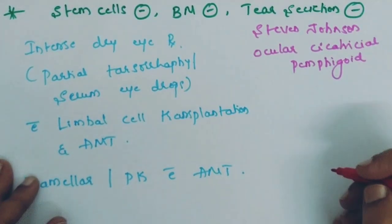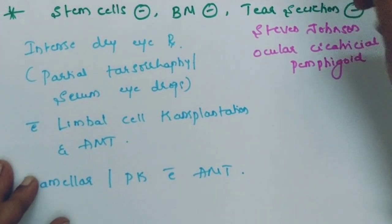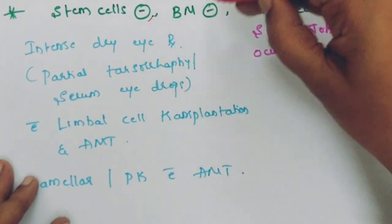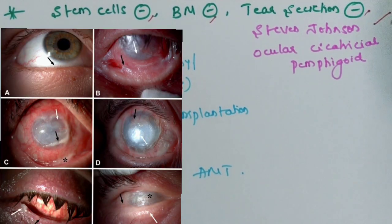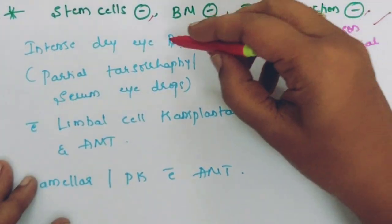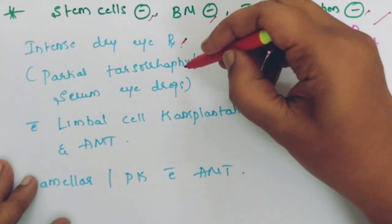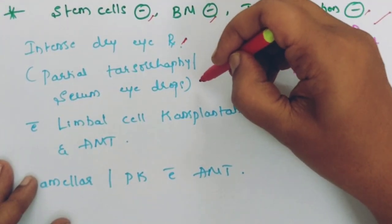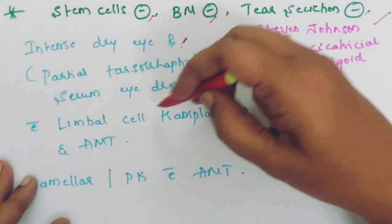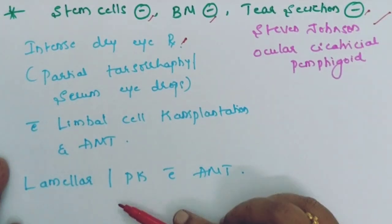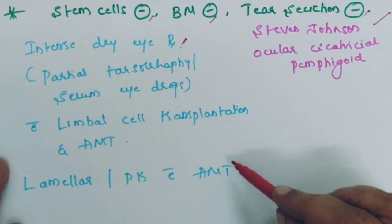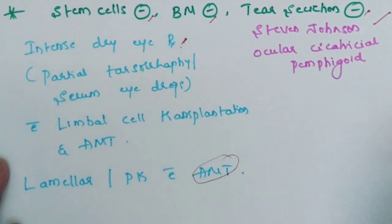In scenario 3, all components are absent — no stem cells, no basement membrane, and tear secretion is also impaired, as occurs in Stevens-Johnson syndrome or ocular cicatricial pemphigoid. This requires intense dry eye treatment, possibly partial tarsorrhaphy, serum eye drops, limbal cell transplantation with amniotic membrane, and in severe cases, lamellar or penetrating keratoplasty along with amniotic membrane transplantation.